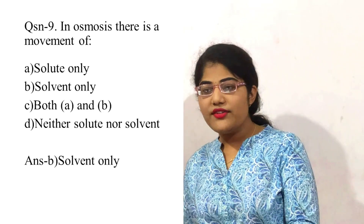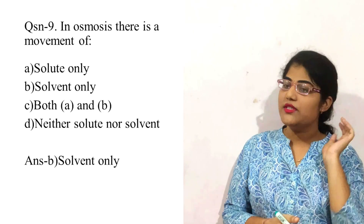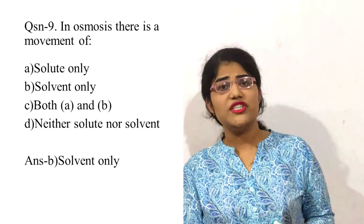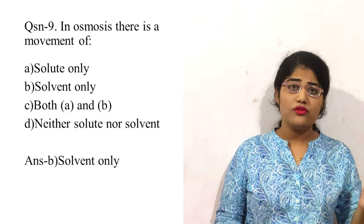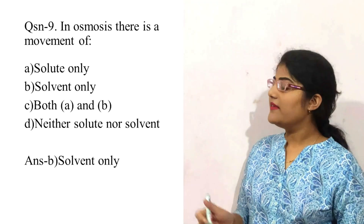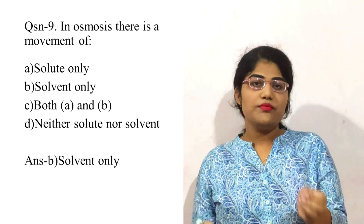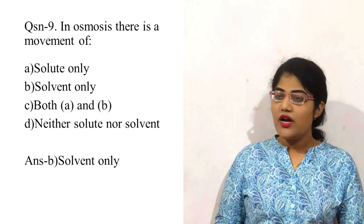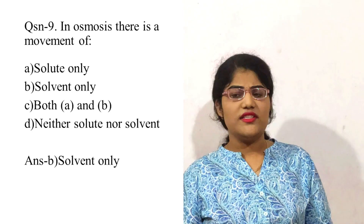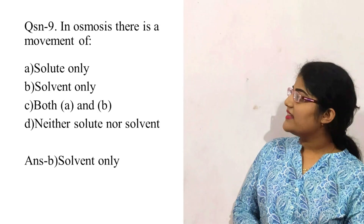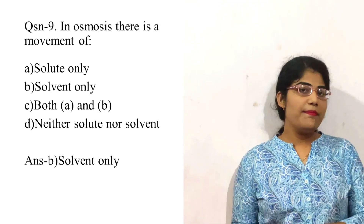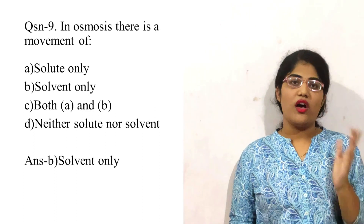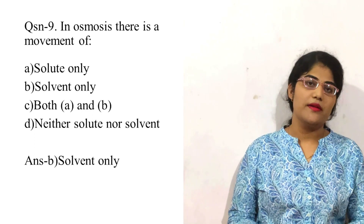Question number nine: in osmosis there is a movement of what? This is a direct question that appeared in MSc entrance in 2016. In osmosis there is a movement of water, that is the solvent, from one medium to another. The correct option is B, solvent only. In diffusion both solute and solvent pass, but in osmosis only the solvent can pass through the semi-permeable membrane; the solute cannot.